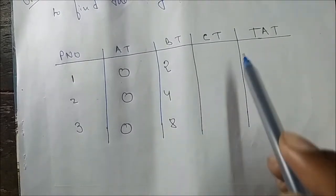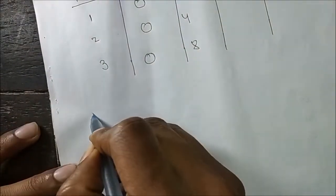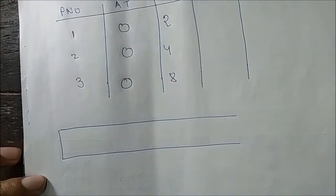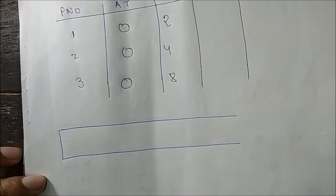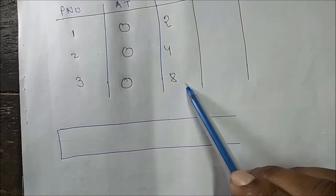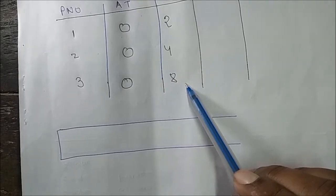We need to find the completion time and turnaround time by drawing the Gantt chart. In a previous session we covered Shortest Remaining Time First, where the process with the shortest burst time executes first. Here, in LRTF, the process with the highest burst time will execute first.